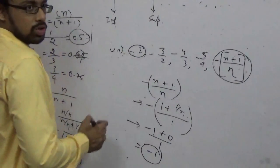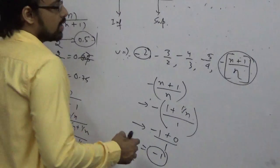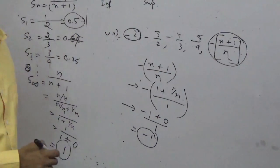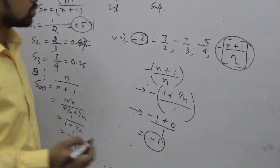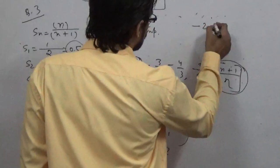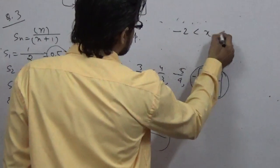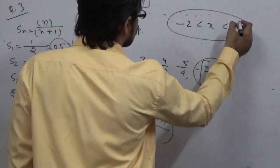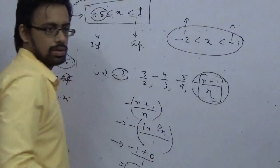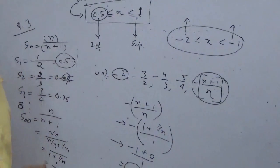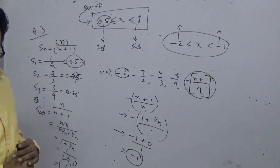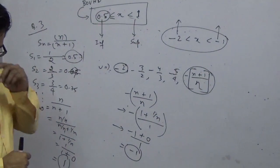So the pattern is from minus 2 to minus 1. Now you know what is Suprema and what is Infima. This is the process of finding Suprema and Infima, which is done in a very tough way in most books and study materials, but this is the shortcut way.